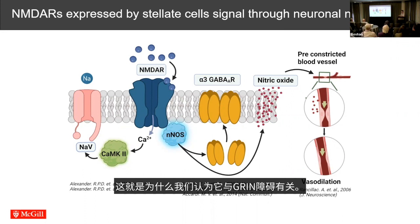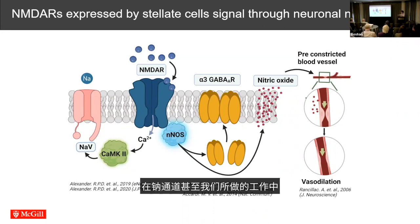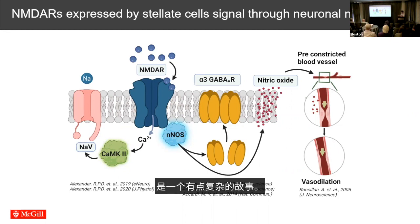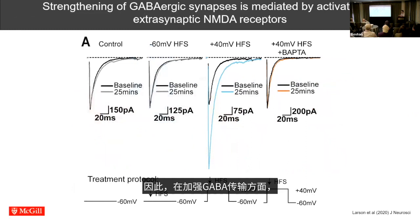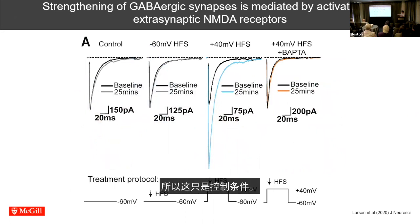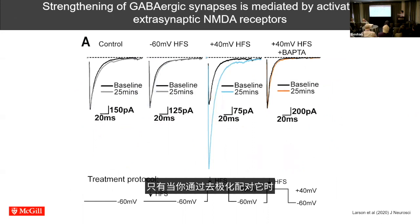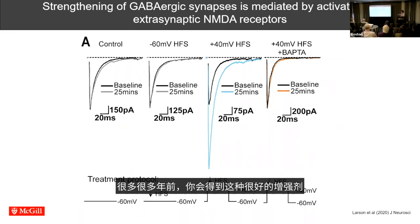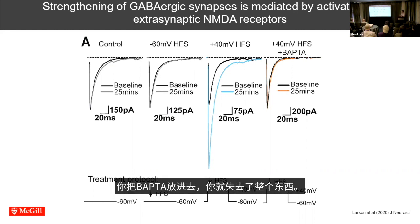Because NMDA receptor function is much reduced in stellate cells in the fragile X mouse, all of these mechanisms are completely gone, and we think this homeostatic mechanism is repeated all the way across the brain. In terms of strengthening GABA transmission: under control conditions, if you do high-frequency stimulation that activates NMDA receptors, it's only when you pair it with depolarization — relieving the magnesium block — that you get this nice potentiation of a GABA current, not an AMPA current. Put BAPTA in and you lose the whole thing.